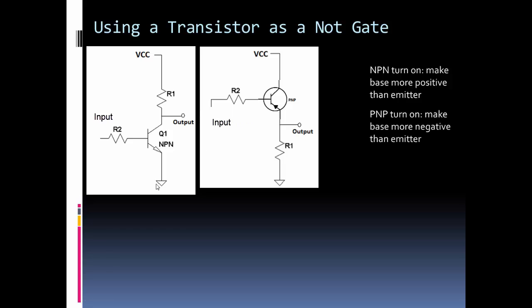PNP is just the opposite. We want to make the base more negative than the emitter and what I did here is I just switched around the resistor and the output so we can still get the PNP to also act like a NOT gate by switching around the position.